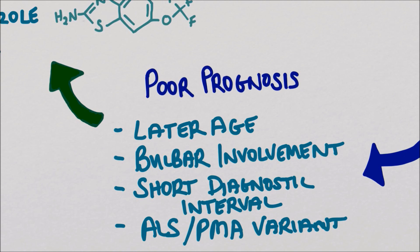There are a number of factors which point towards a poor prognosis, such as later age of onset, bulbar onset, short diagnostic interval, or having the ALS or PMA variants.